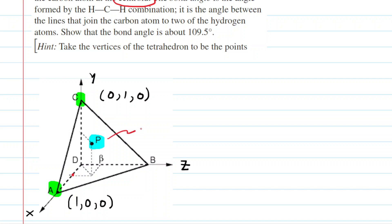In conclusion, point P would have coordinates of one-half, one-half, and one-half — that's where the carbon atom is located. To find the angle, we wish to draw two vectors both coming from point P: a vector from point P to point C, and then a second vector going from point P to point A.